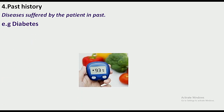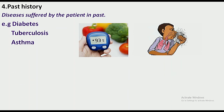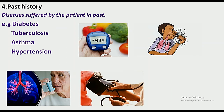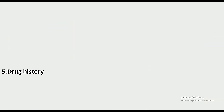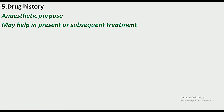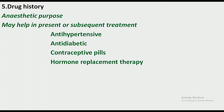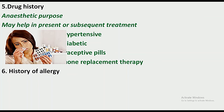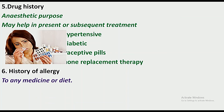Past history also plays a role. Diseases suffered by the patient in the past are important — diabetes, tuberculosis, asthma, and hypertension are all significant. Drug history is important for anesthetic purposes and may help in present or subsequent treatment. Ask about anti-hypertensives, anti-diabetics, oral contraceptive pills, and hormone replacement therapy.